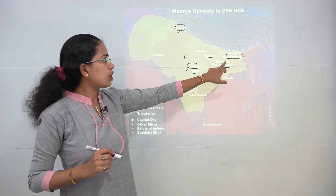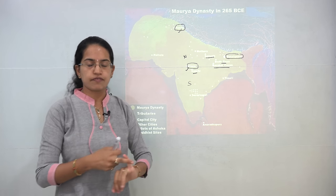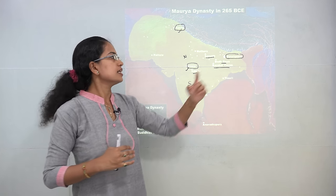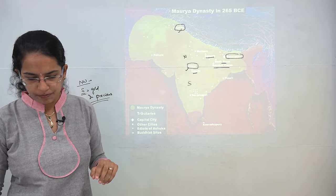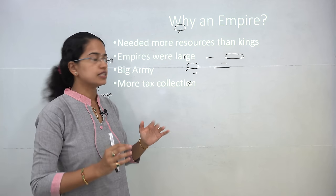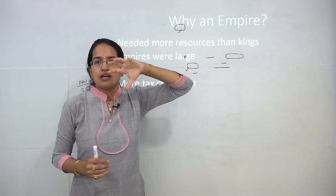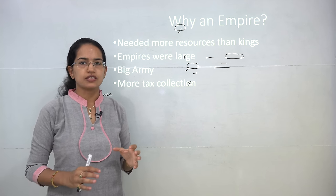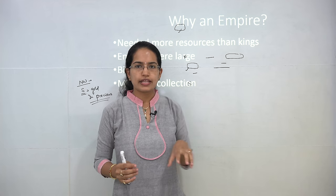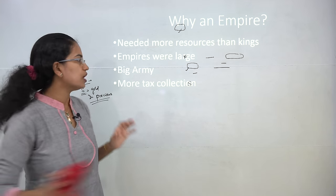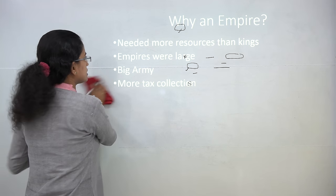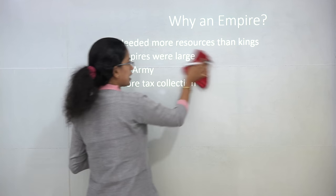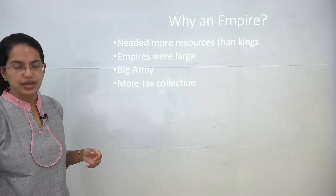There was a lot of work done in the field of roads and rivers, with the focus on transportation. Good transportation and communication links allowed greater conquest and territorial expansion. The Mauryan dynasty is known as an empire, not a kingdom. An empire is ruled by an emperor, is much larger in area and resources, maintains a bigger army, and collects much higher taxes compared to a kingdom.